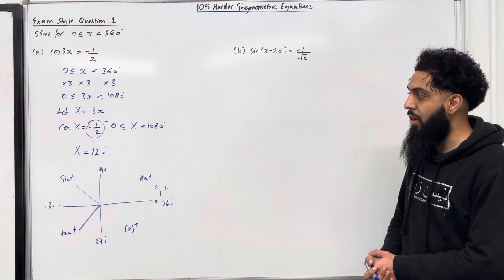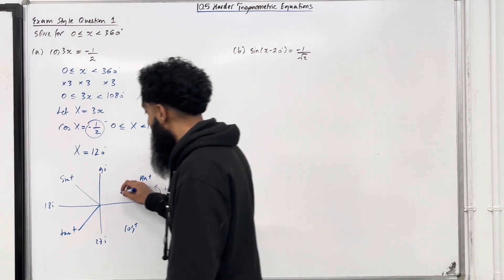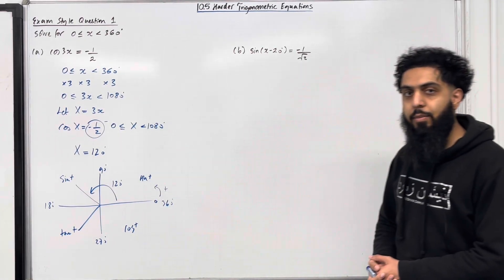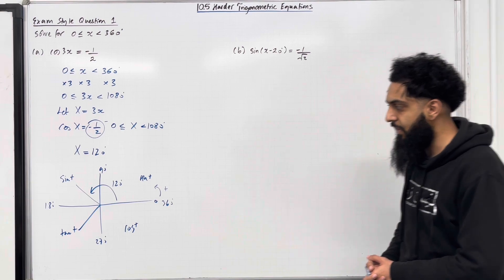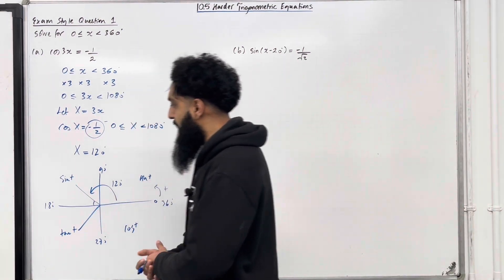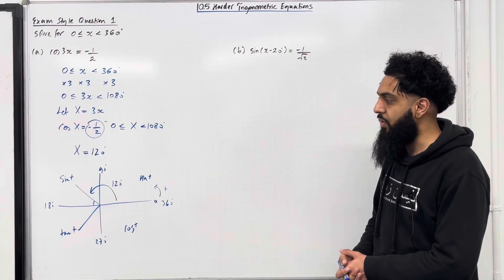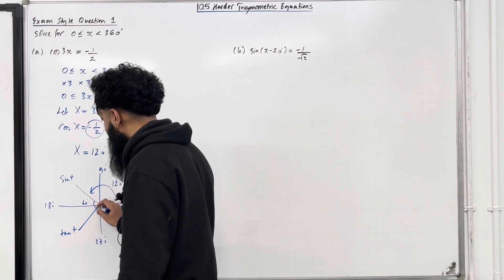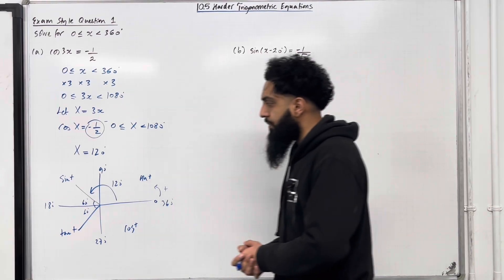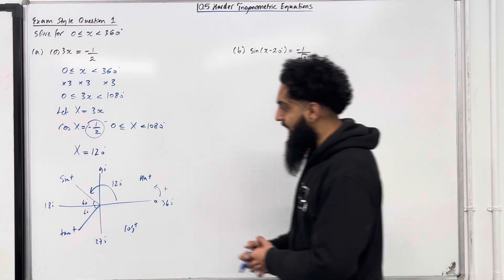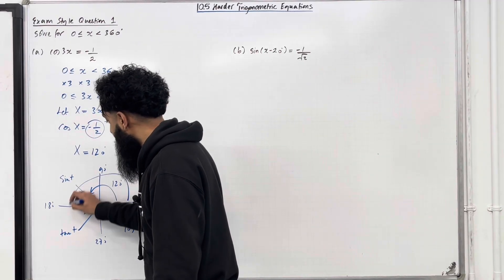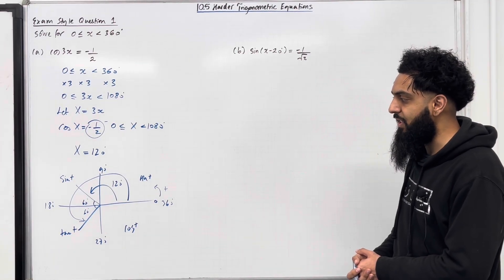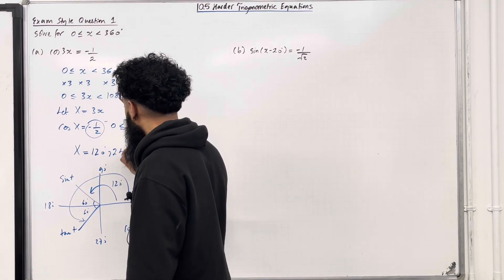The first solution for capital X is 120 degrees. This represents this angle here. The acute angle with the horizontal axis is 180 minus 120, which is 60 degrees. By symmetry, the acute angle on the other side is also 60 degrees. So the first solution is 120 degrees, and the second solution, going anti-clockwise to the second line, is 180 plus 60, which is 240 degrees.